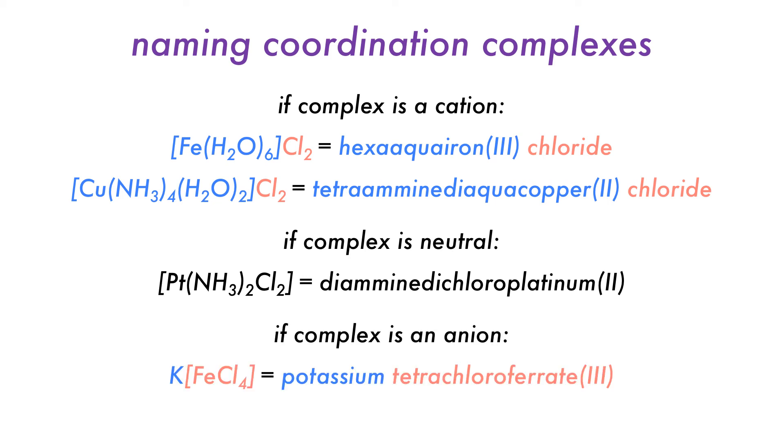If the complex is anionic, we change the metal name, and add the positive counter ion in front of the complex, as we must follow the cation anion name order convention.